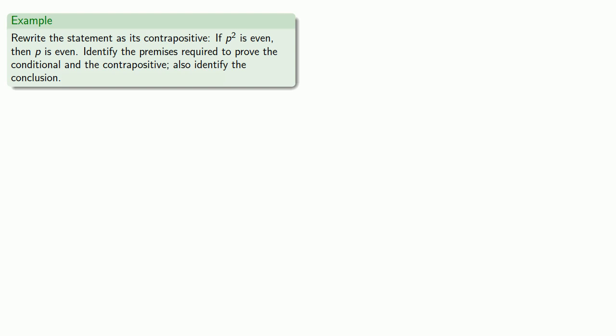For example, let's rewrite this statement as its contrapositive. If p² is even, then p is even. Let's identify the premises required to prove the conditional and its contrapositive, and also the conclusion, and which of these two seems easier to prove.